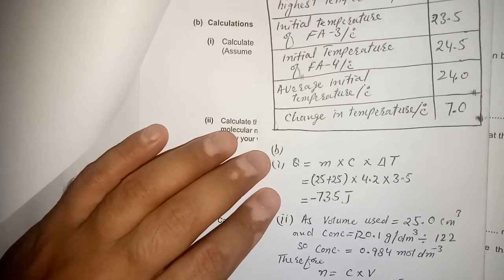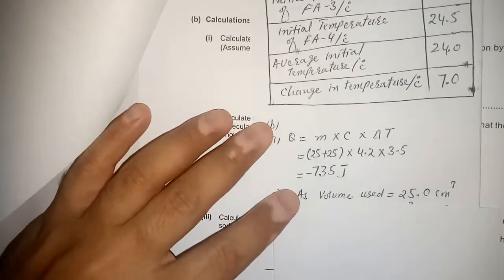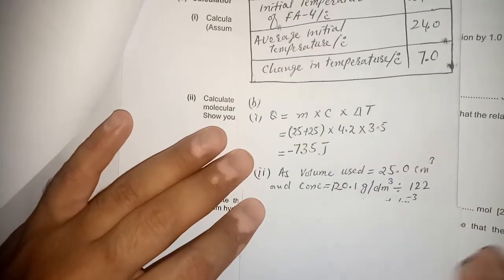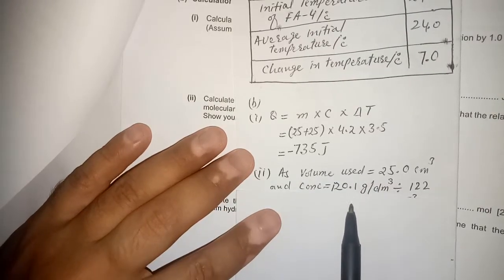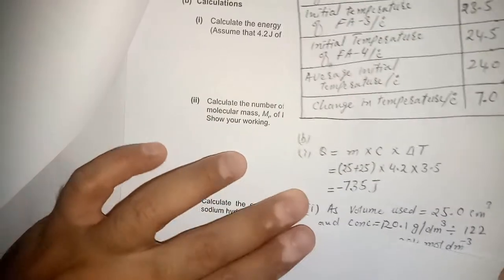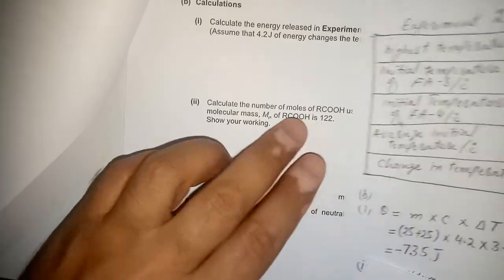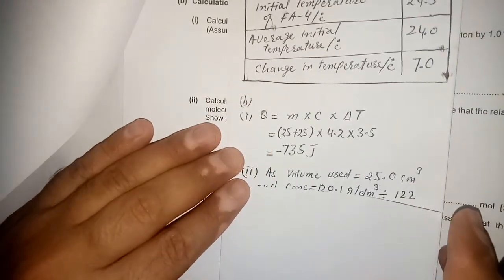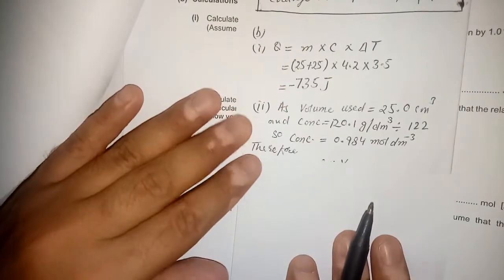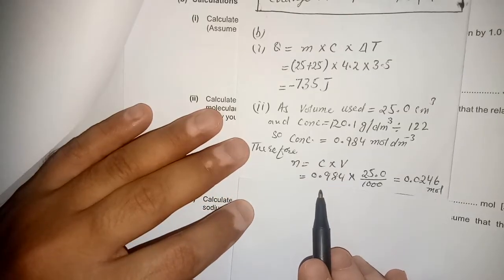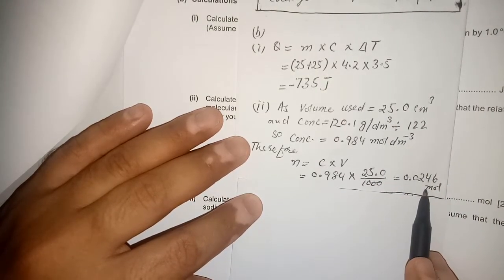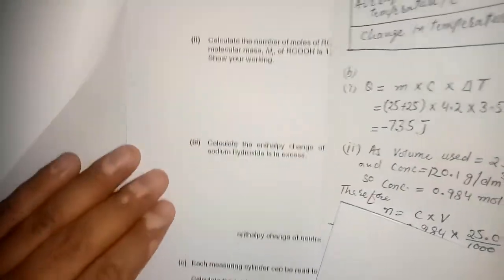Next, it was asked to calculate the moles of acid used. We were provided with the concentration in g/dm³. To convert from g/dm³ to mol/dm³, divide by the Mr — which is given in the question as 122. Then using the formula n = CV, replacing the concentration in mol/dm³ and the volume of 25.0 cm³, we get the number of moles. Second part is finished.